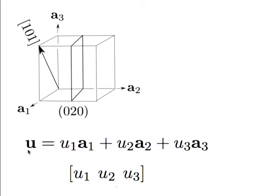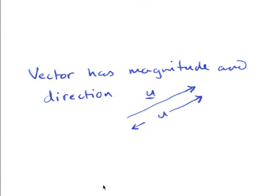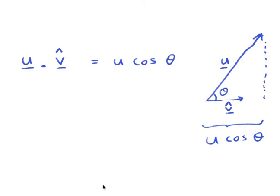A general direction u we would simply represent as a linear combination of a1, a2 and a3 and write the components as the Miller indices of that direction. And of course, direction is a vector — it has an orientation and also a magnitude u — and we can take dot products between vectors to find the projection of a particular vector u along another direction.